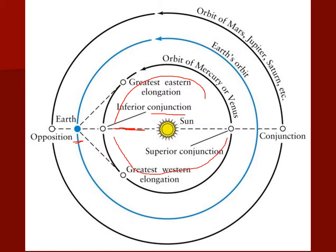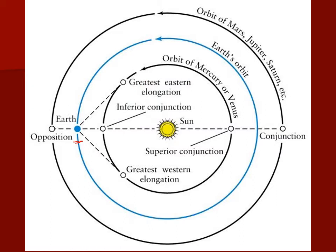When an inferior planet gets to the other side of the solar system, it also lines up with the sun as seen from Earth, and we call that a conjunction too. The conjunction where the planet is between Earth and the sun is called an inferior conjunction, and the conjunction where the planet is on the other side of the sun is called a superior conjunction.